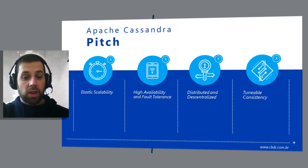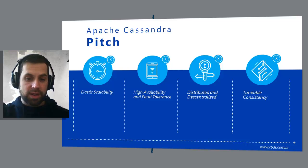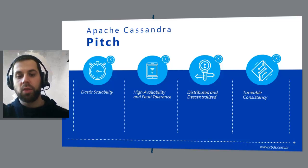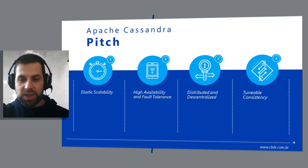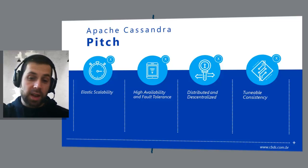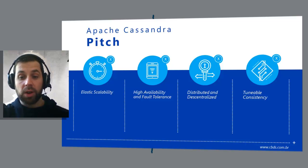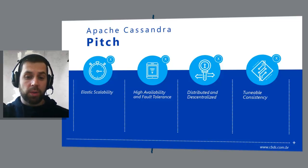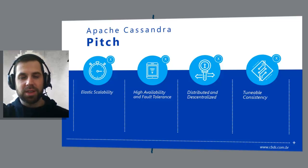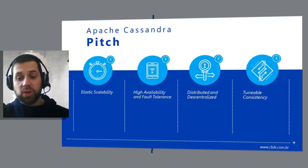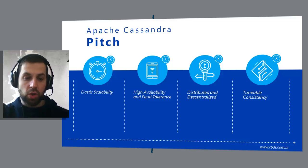Tunable consistency. Consistency essentially means that a read always returns the most recently written value, but there is no free lunch. Scaling data stores means making certain trade-offs between data consistency, node availability, and partition toleration. Cassandra is frequently called eventually consistent, but more accurately it is termed tunable consistency, which means it allows you to easily decide the level of consistency you require in balance with the level of availability.